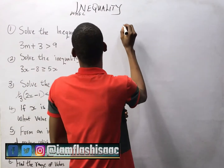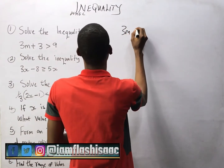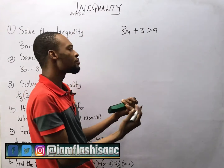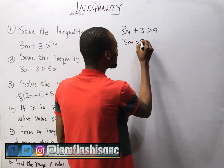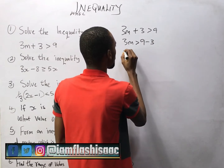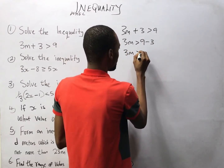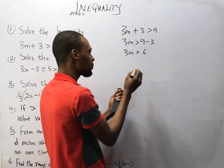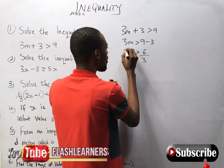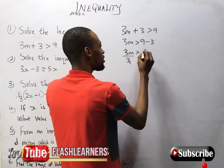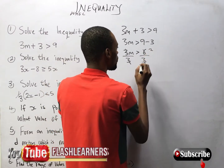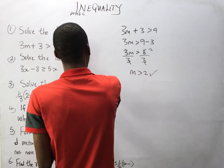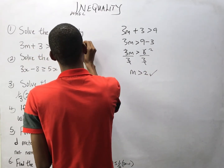The first question says: 3M plus 3 is greater than 9. Collecting like terms, 3M is simply greater than 9 minus 3, so 3M is greater than 6. Dividing both sides by 3: 3 divided by 3 is 1, and 6 divided by 3 is 2. Therefore, M is greater than 2. This is the solution to the first question.